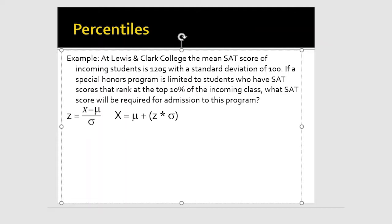Now let's look at a different example related to the use of percentiles — this is the kind of thing you'll see in real-world applications. At Lewis-Clark College the mean SAT score of incoming students is 1205 with a standard deviation of 100. If a special honors program is limited to students who have SAT scores in the top 10 percent of the incoming class, what score will be used for admission? This is a lot trickier compared to the other problems we had for straight-up percentile rank.